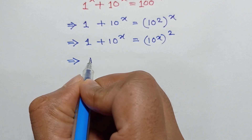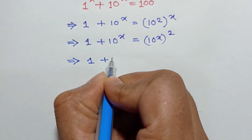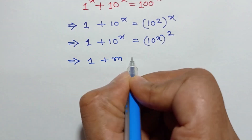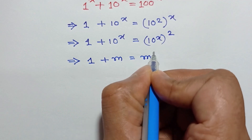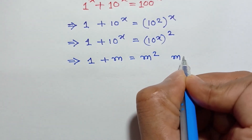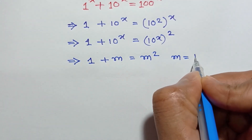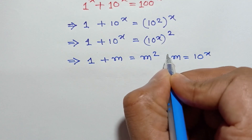Let's consider 10 to the power x is equal to m. So we can write 1 plus m is equal to m squared, where m is equal to 10 to the power x.